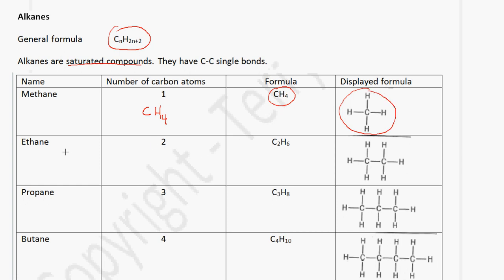The next member is ethane. Ethane has 2 carbon atoms, so the formula will be C2H. If we use the formula, it will be 2 times 2 which is 4 plus 2 which is 6, so that is how we got C2H6. Therefore, we have 2 carbon atoms and 6 hydrogen atoms.